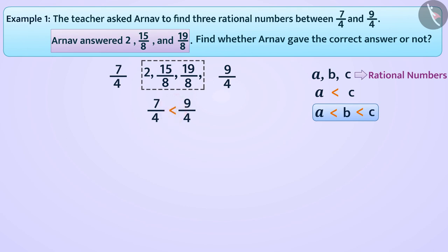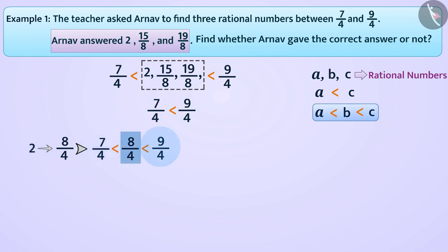In this way, we see that in 2, 15 by 8, and 19 by 8, each number must be greater than 7 by 4 and smaller than 9 by 4. We can write 2 as 8 by 4. In this way, we know that 7 by 4 is less than 8 by 4 is less than 9 by 4, meaning 2 is between 7 by 4 and 9 by 4.